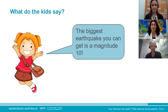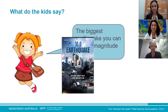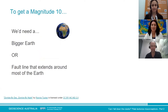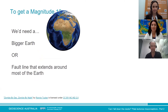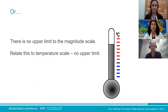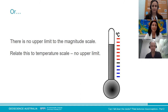Another misconception — perhaps inspired by movies and TV shows — is that the biggest earthquake you can get is a magnitude 10. This is easy to address. To get a magnitude 10 we'd either need a bigger Earth or a fault line that extends around most of the Earth. There is actually no upper limit to the magnitude scale — just as there is no limit to the temperature scale.